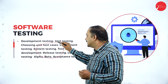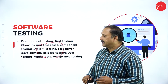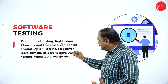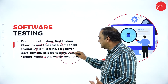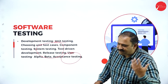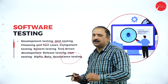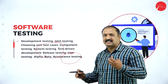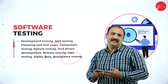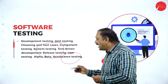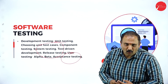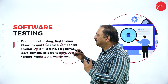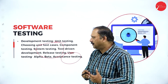In software testing, the topics include system testing, test case development, user testing, alpha testing, beta testing, and acceptance testing. These test cases are very important because there are patterns where you would be developing and using them to take the project to the next level.